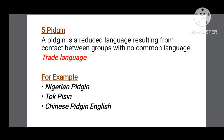Pidgin is defined as a reduced language resulting from contact between groups with no common language. Pidgin language ki wo variety hai joki business purposes ki liye banai jaiti hai, temporary basis per, aur isi liye isko trade language bhi kehti hai. The most common examples of pidgin include Nigerian Pidgin, Dog Pidgin, and Chinese Pidgin English.